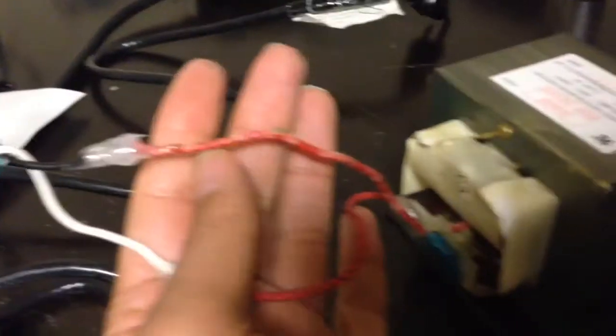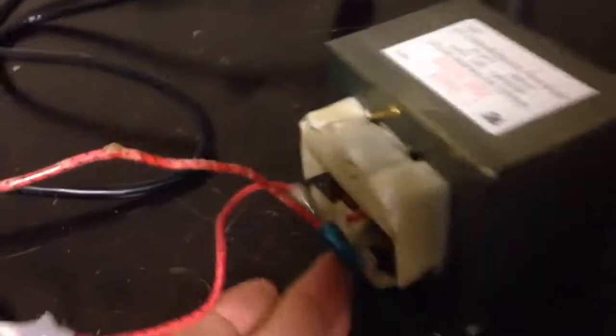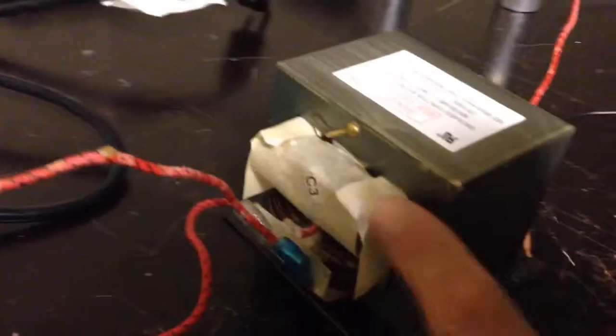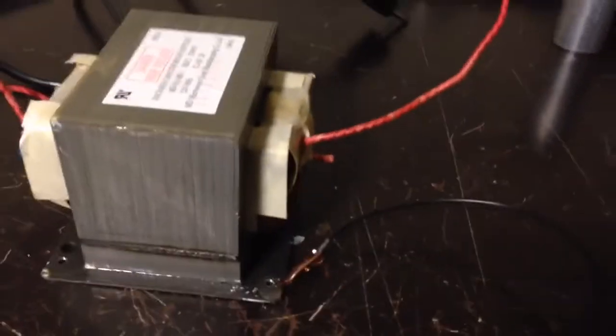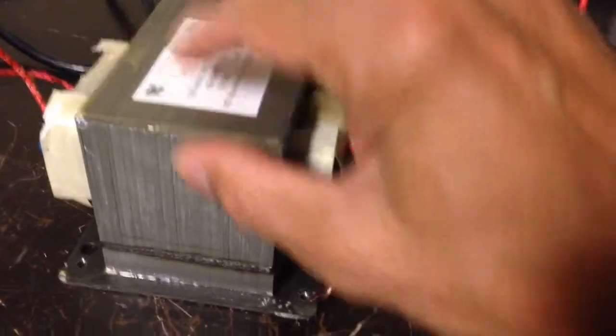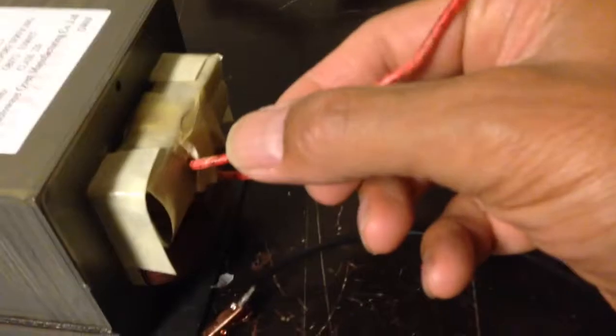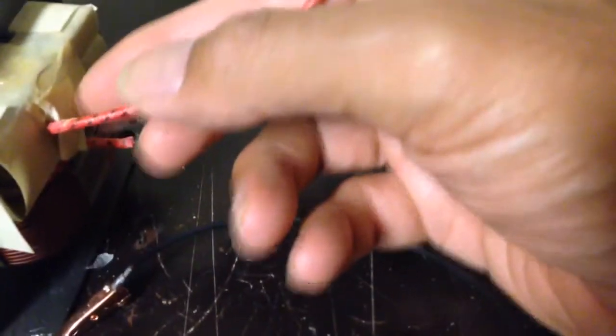And it has two inputs for the thicker primary, and then it's got thin wire, which is the secondary right here. And one end of the secondary goes to the core of the transformer, and the other one usually comes out the front of it like that. And this one has a wire on it.